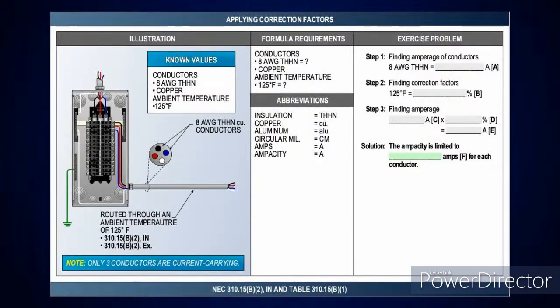One important thing to keep in mind: if you're only routed through that high ambient temperature for less than 10% of the run, you don't need to derate it. Go look at NEC 310.15 B2 exception. We put those in our publication for things for you to consider. These are things that could be on the test — and our code loops help you navigate all the different steps to verify you're on the right track.